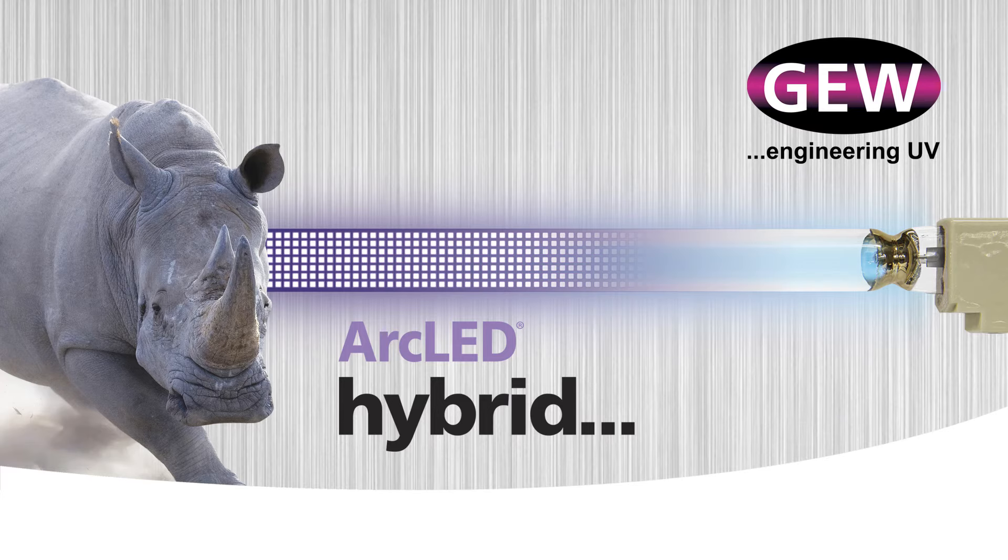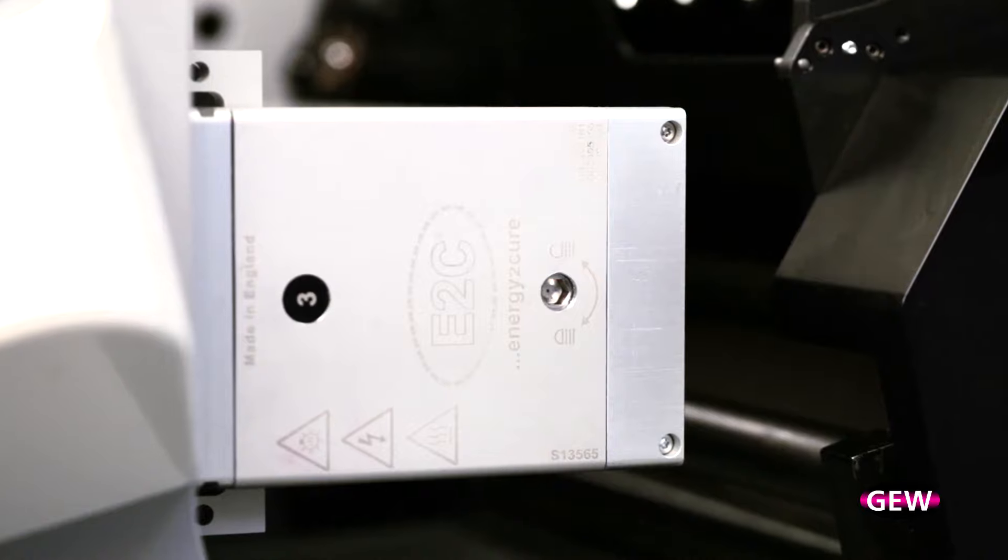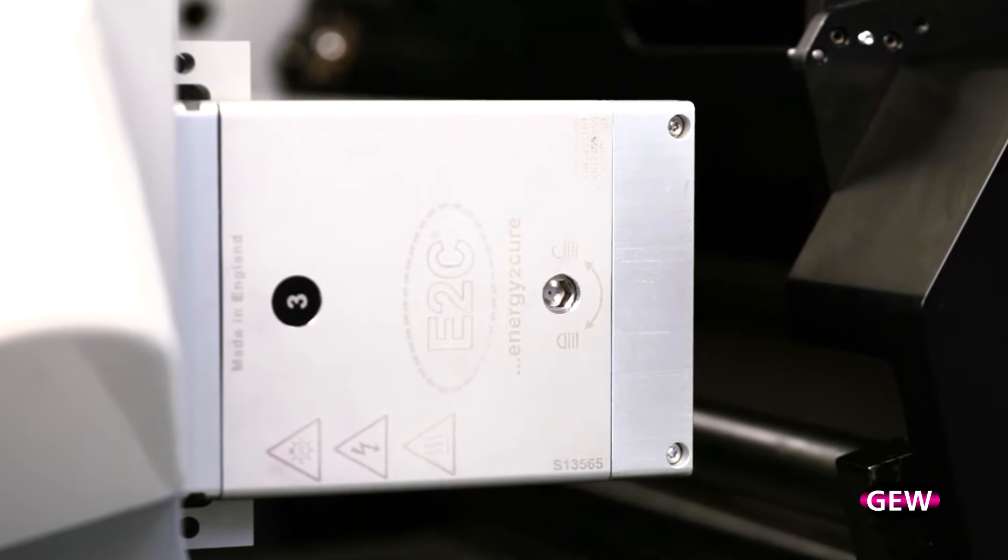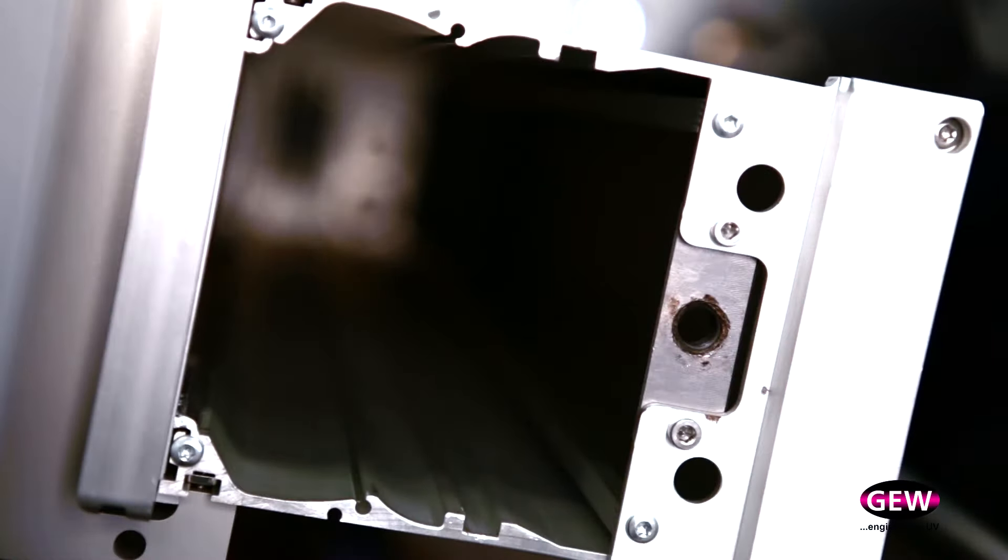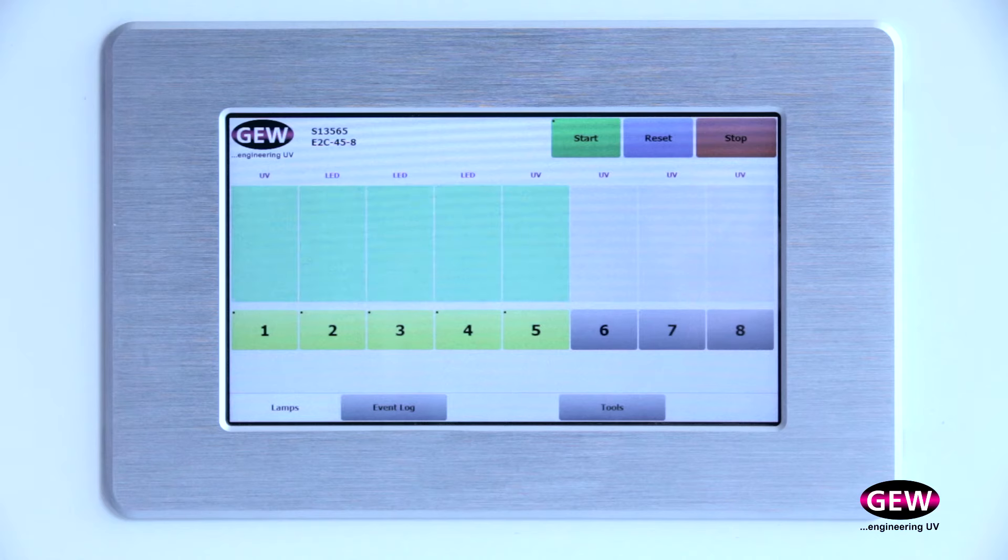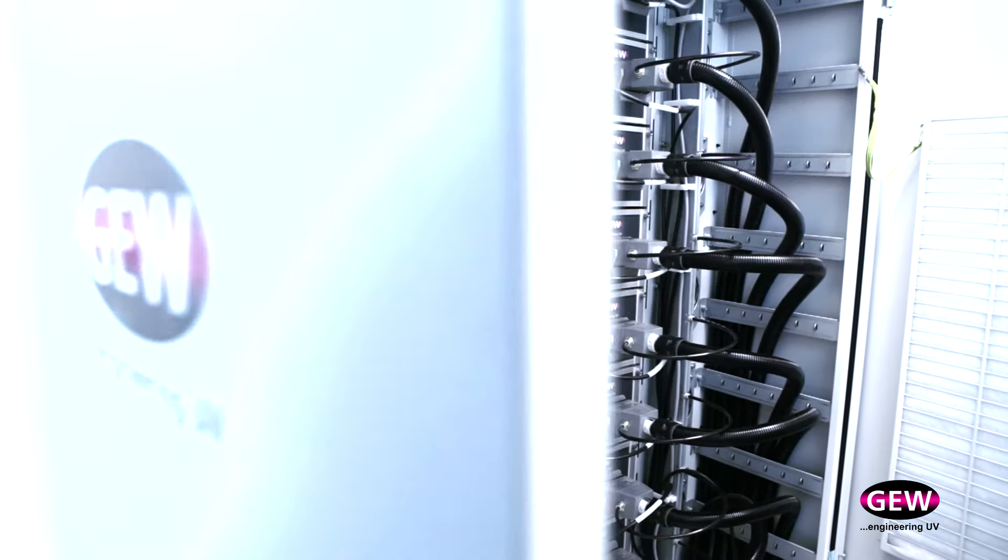GEW's Arc LED Hybrid UV Curing System enables both E2C Mercury Arc Lamp and LW1 LED UV Curing technologies to be used interchangeably with the same hybrid lamp housing, control interface, and Rhino Arc LED power supply.